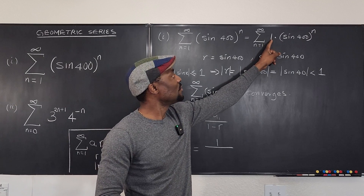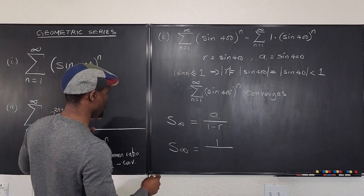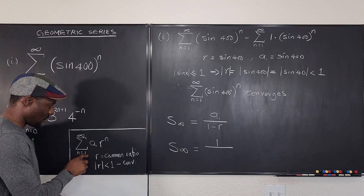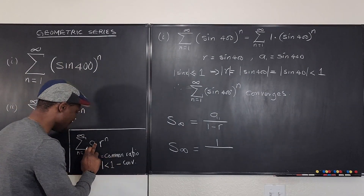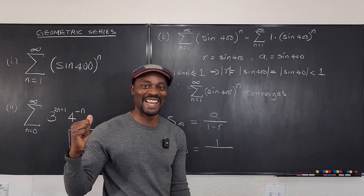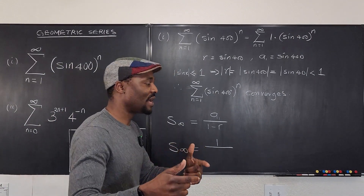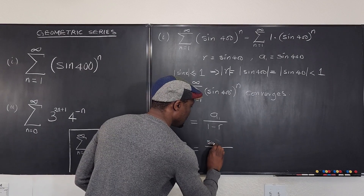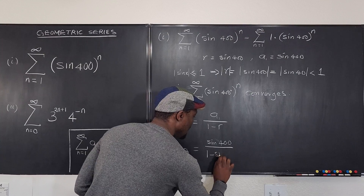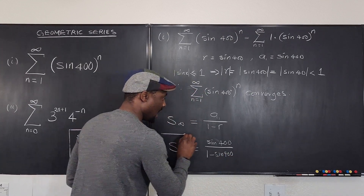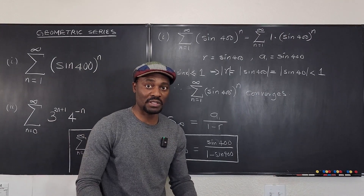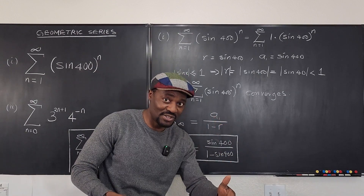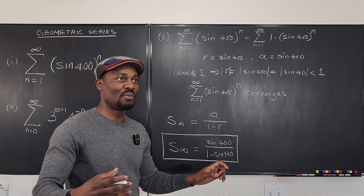So find your a depending on where n starts — whether it's a sub zero or a sub one. Here, a sub one equals sine 400, so the sum to infinity is sine 400 divided by one minus sine 400. If you don't have a calculator and you're not allowed to approximate, sine 40 is between sine 30 degrees and sine 45 degrees, so it's between 0.5 and 0.7.